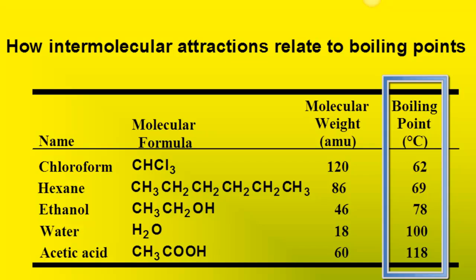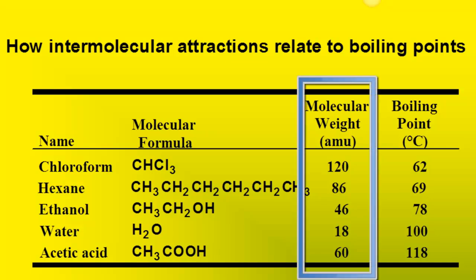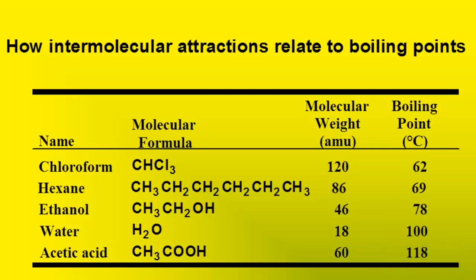Let's take a look at the boiling points for these compounds. Chloroform has the lowest and acetic acid has the highest. Chloroform is the heaviest compound but it has the lowest boiling point — it doesn't take that much heat to get chloroform to boil. Acetic acid is about half the weight of chloroform and it boils at 118 degrees. Water, the lightest compound in the list, has a very close boiling point to that of acetic acid at 100 degrees — almost twice that of chloroform.